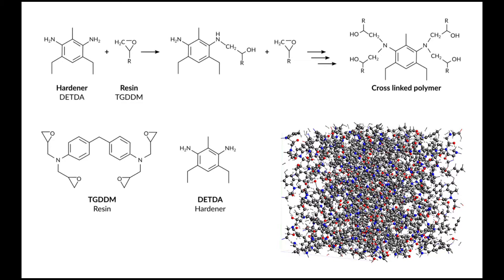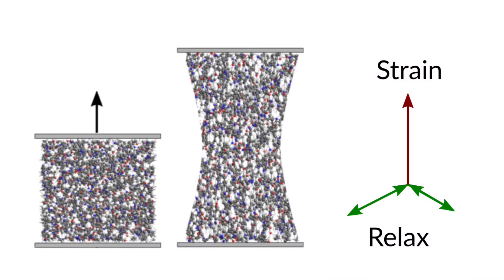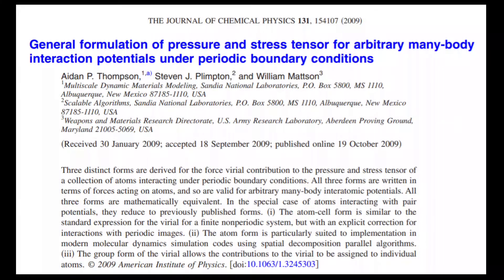The structure will now be strained by a uniaxial strain, which means we will gradually stretch one of the lattice vectors while allowing the remaining two vectors to relax. By allowing the other lattice vectors to relax, we can simulate an approximate Poisson ratio as well. The polymer system will experience stress due to the strain, and this stress is calculated as the pair atom stress tensor according to the paper by Thompson and Plimpton.